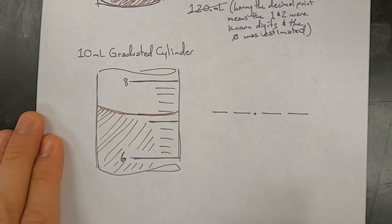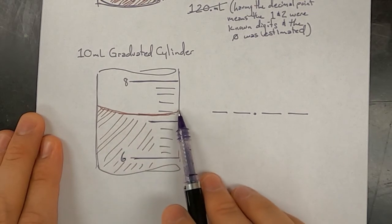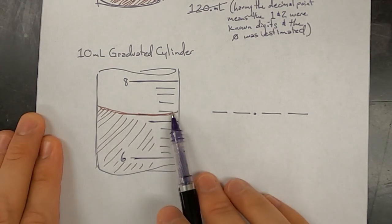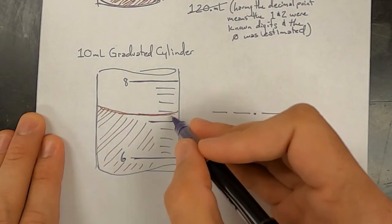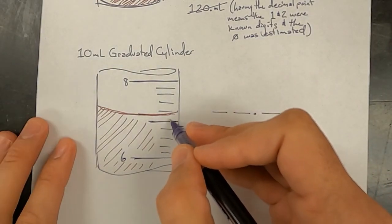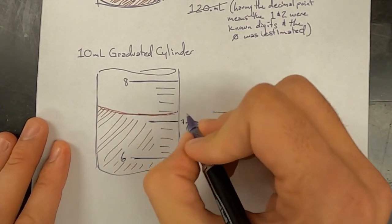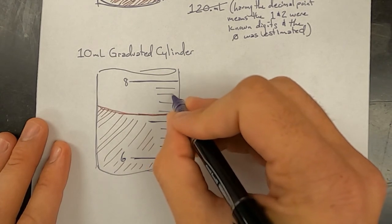Now I think at this point, people know that they need to be measuring from the bottom of the curve called the meniscus. And so that's not really what makes this part challenging. It's that each of these little tick marks, if you count them and you think about it, each one of these spaces is worth not one tenth of a milliliter, but they're each worth two tenths. So this one would be 7.2, 7.4, 7.6, 7.8.